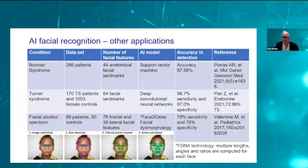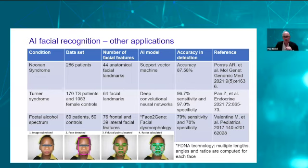AI facial recognition has also been applied to Noonan syndrome, Turner syndrome, and fetal alcohol spectrum disorder. In the fetal alcohol spectrum example, 76 frontal and 39 natural facial features are used through a technology called Face2Gene, which is publicly available and used in clinical practice. Using FDNA technology, it can detect fetal alcohol spectrum disorder with a sensitivity of 79% and a specificity of 78%.